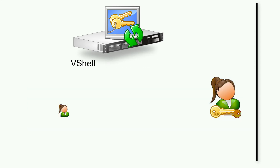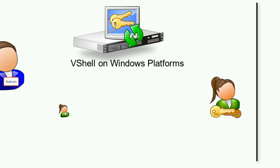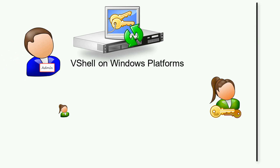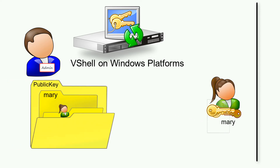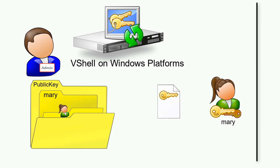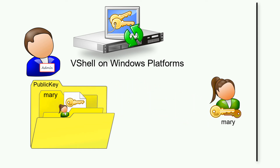In VanDyke Software's vShell server for Windows, an administrator associates a Public Key with a specific user account by creating a folder named to match the user's account name within vShell's Public Key folder. The client's Public Key file is then placed into that user-specific folder.